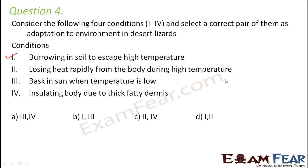Condition two — losing heat rapidly from the body during high temperature — does not really happen in lizards, so that is not correct. Condition three is basking in the sun when temperature is low. Desert lizards absorb heat when their body temperature drops below the comfort zone, and some can also burrow into soil to escape excess heat — so conditions one and three are the correct adaptations.